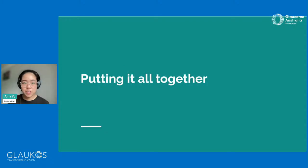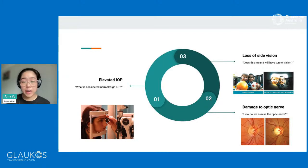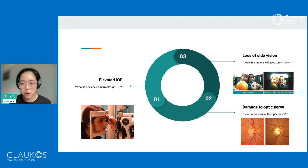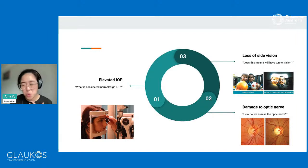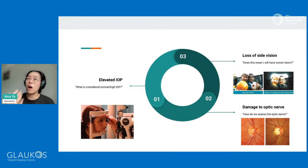Putting everything together now: glaucoma is essentially made up of two or three key factors. The first is elevated eye pressure. There is actually no set number for everyone — the actual eye pressure can range from as low as about 8 or 9 to as high as 20, 21, even 22, and that could be normal between different individuals. How we can tell it's elevated is when it's above a certain level that disrupts the homeostasis of the eye. That's why we need to measure eye pressures over and over again — to make sure they are consistently at one level so we can judge our diagnosis a little bit more easily.